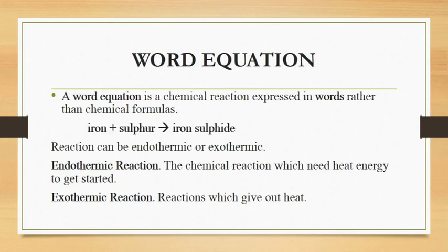A chemical reaction can be shown using a chemical equation or a word equation. The word equation is a simple formula to understand. A word equation expresses a reaction in words rather than chemical formulas. For example: iron plus sulfur to form iron sulfide. Here we use words instead of chemical formulas.